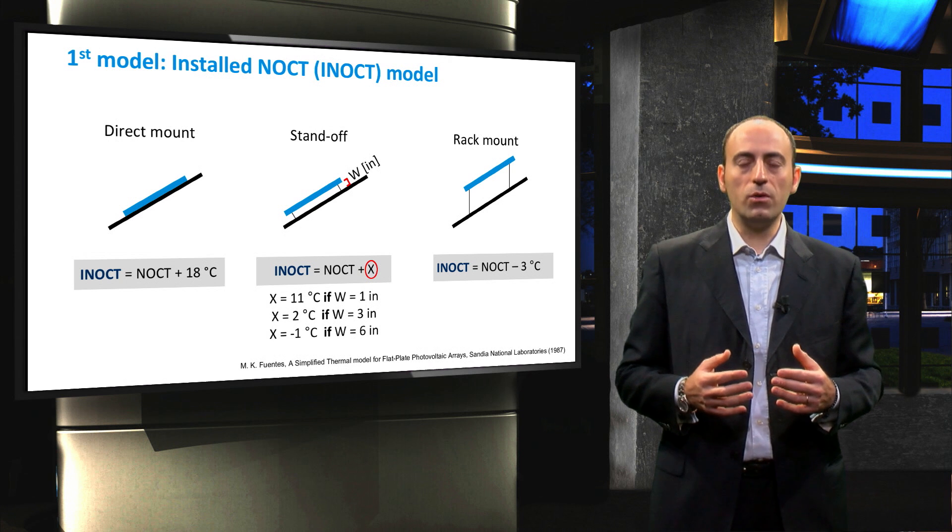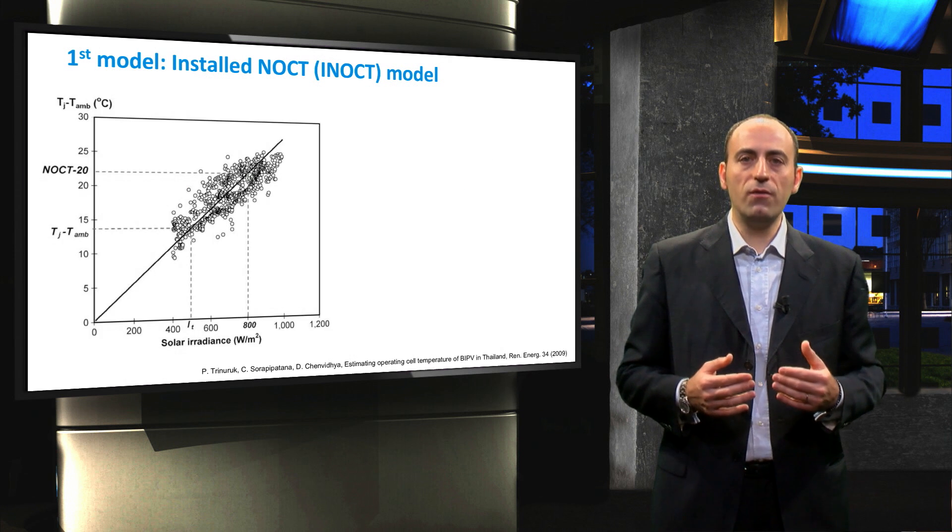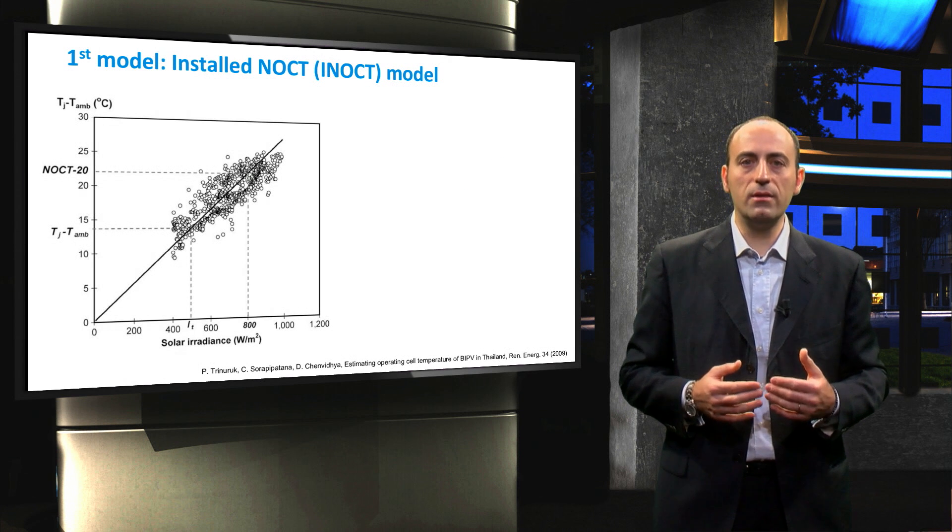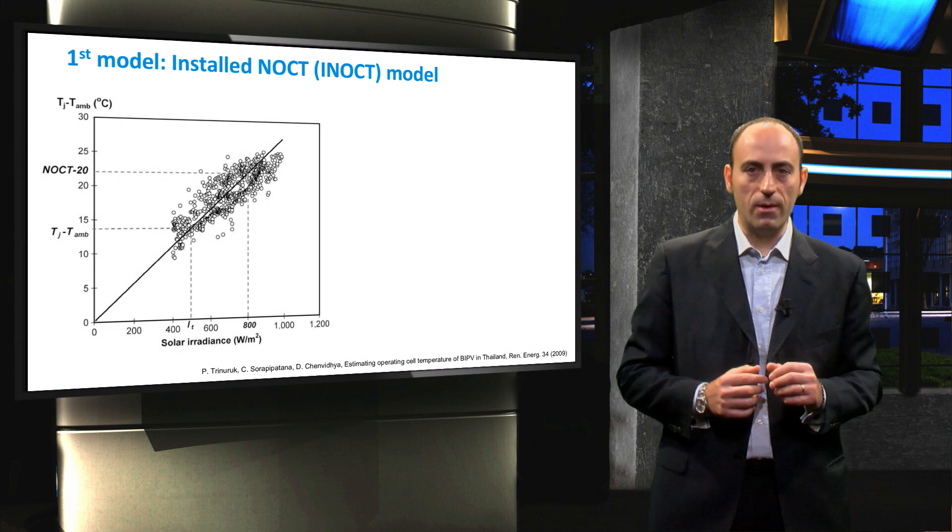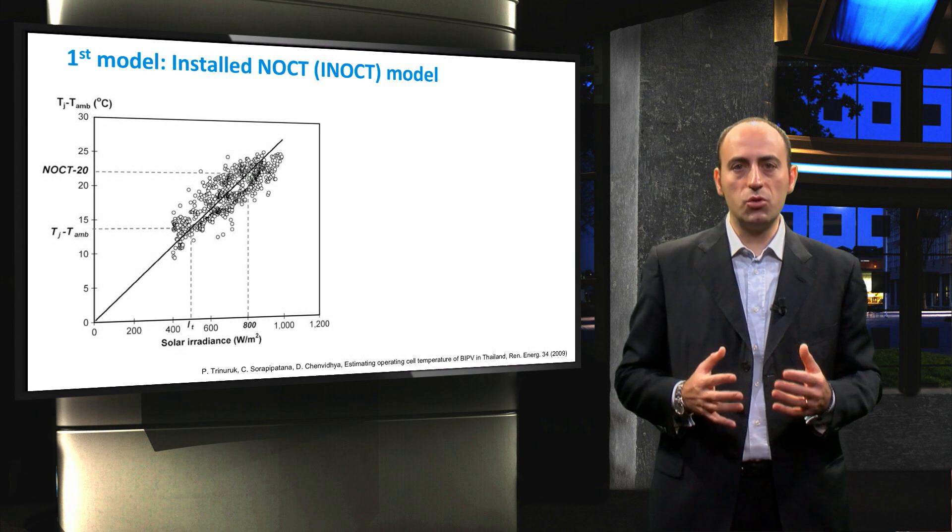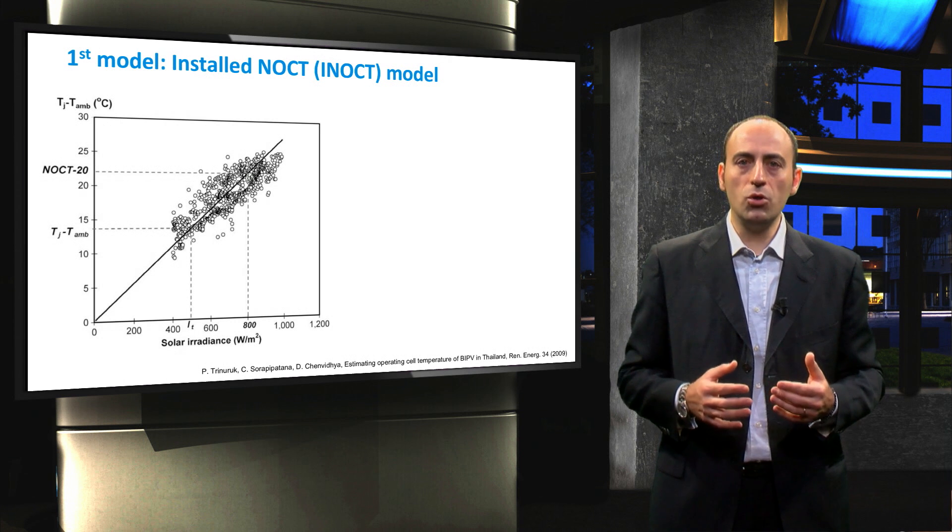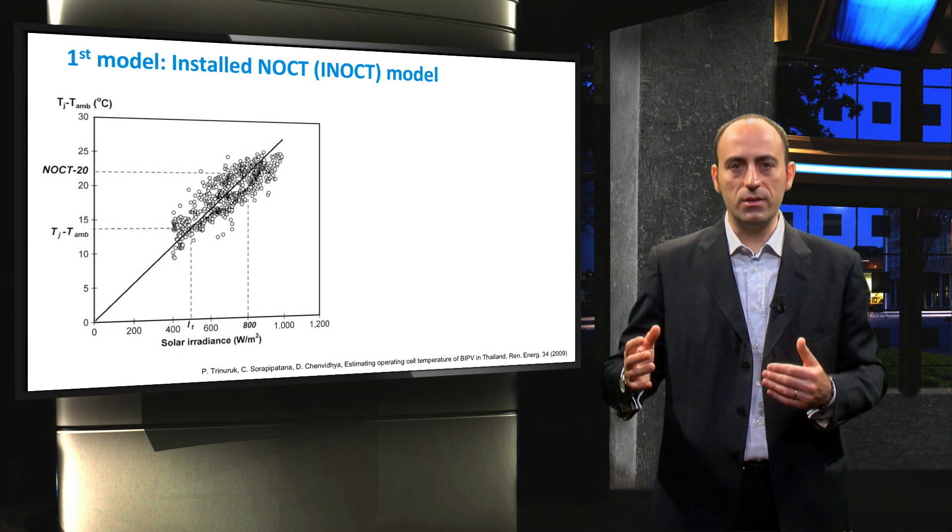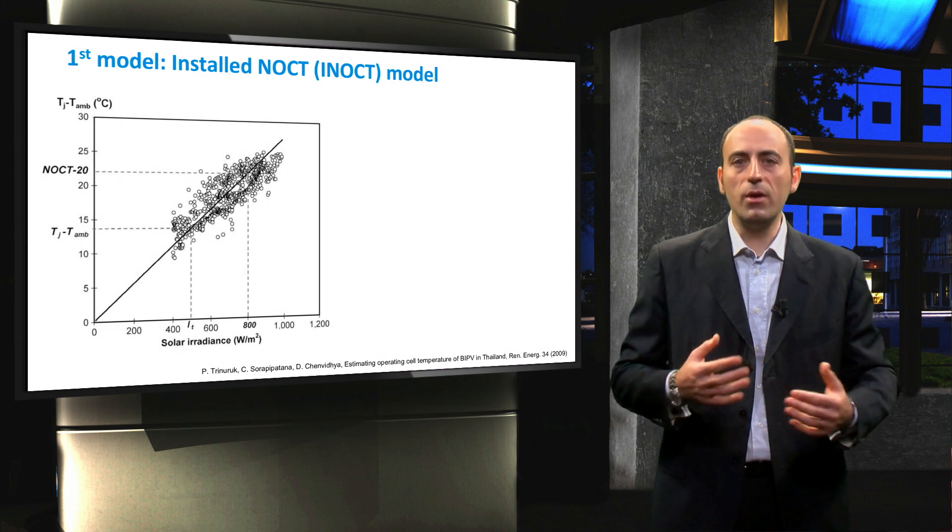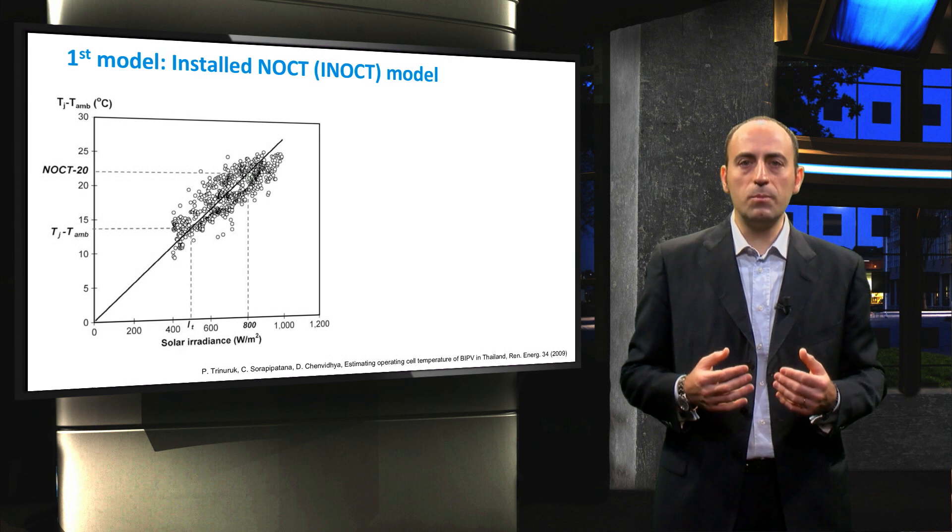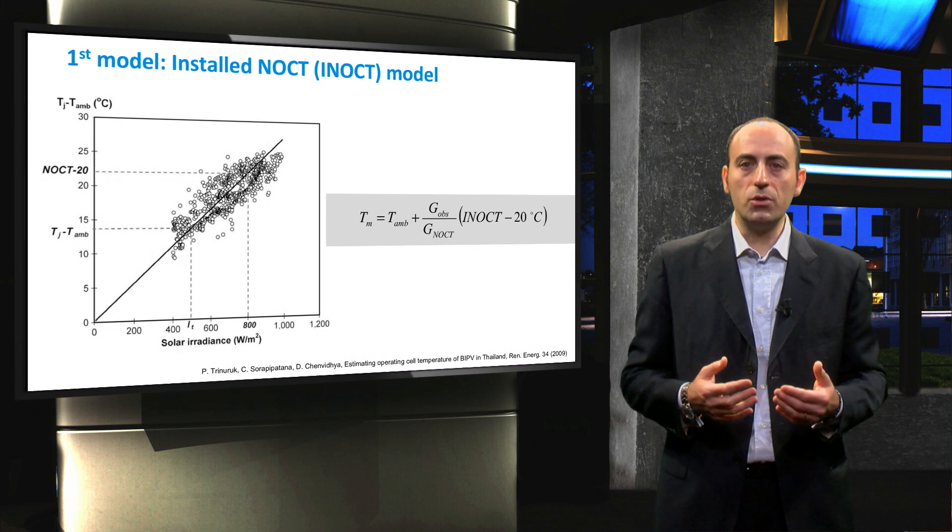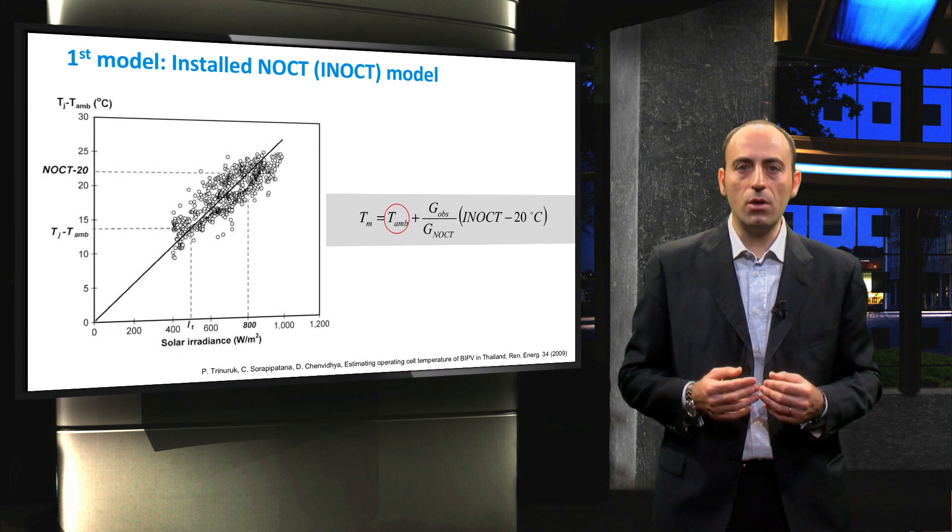The INOCT model is based on a trend found in empirical data for a number of PV systems located in a specific climatic area. In particular, it was observed that the temperature of the module rises almost linearly as the solar irradiance increases. Thus, by interpolating all the scattered data, it is possible to come up with this equation.